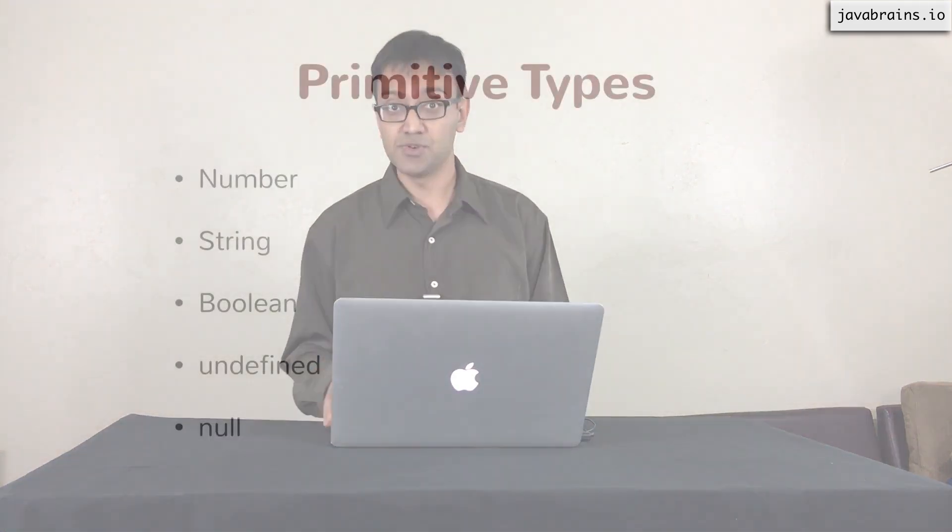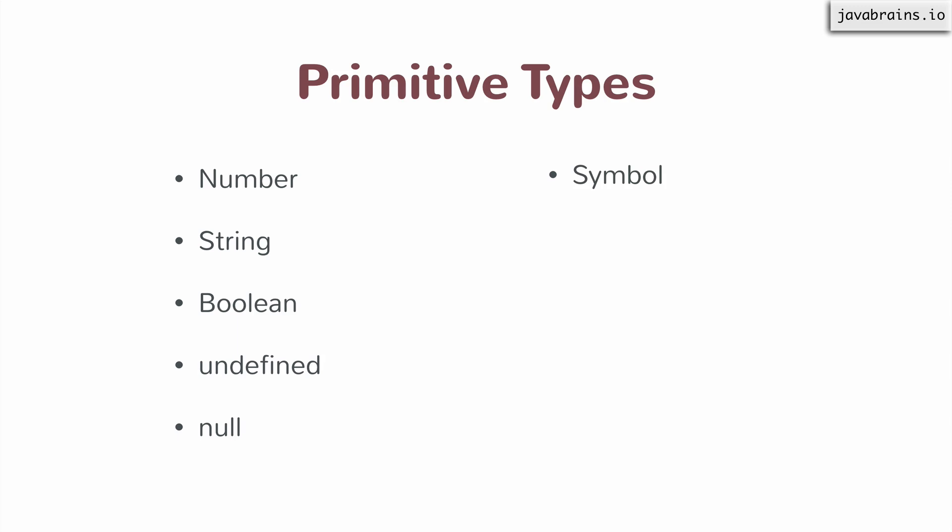These are the complete list of primitive data types in ECMAScript 5. However, the latest version is ECMAScript 6, which comes with one additional primitive type added to the JavaScript language. I'm going to restrict this course to ECMAScript 5 since that's the most widely supported version across browsers today, but I should mention this so you know it's there — it's coming in ECMAScript 6.